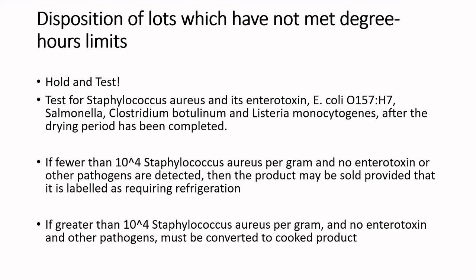If you need to do hold and test, you must identify the disposition of that batch — we will not release unsafe product to the consumer. If degree hours are exceeded, you can test for Staph aureus and its enterotoxin at a contract lab. The Staph aureus culture test and an ELISA-type test for enterotoxin are commonly requested. You should also test for other priority pathogens: E. coli O157:H7, Salmonella species, Clostridium botulinum, and Listeria monocytogenes.